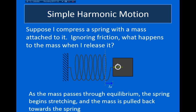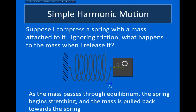As the mass moves past its equilibrium position, it begins to stretch out the spring. So delta x now points to the right, and the spring force will point to the left. So the mass will now experience an acceleration that points to the left. This acceleration will cause the mass to slow down, and eventually the mass will come to rest.